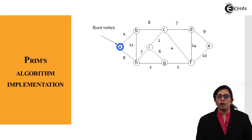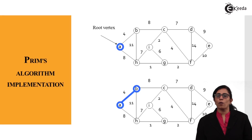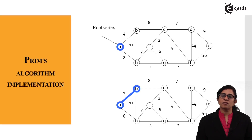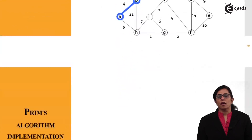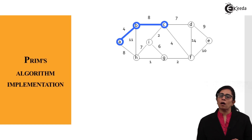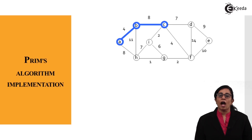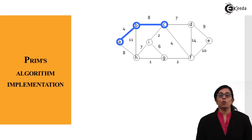From A we find the minimum weighted edge. There are two edges going from A: A to B with value 4 and A to H with value 8. Since 4 is less than 8, we choose edge A to B. Then B becomes the root vertex, and the two edges going out from B are 11 and 8. Since 8 is the minimum, we choose it, so B to C is highlighted.